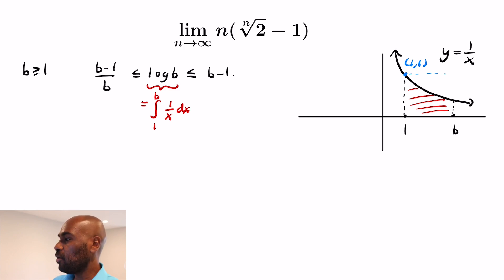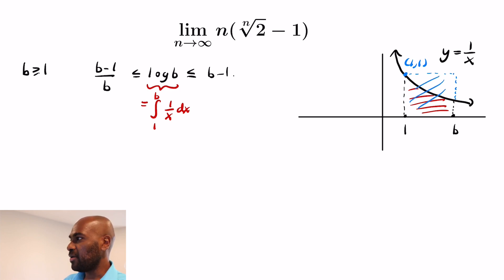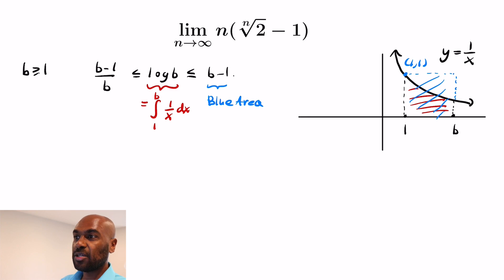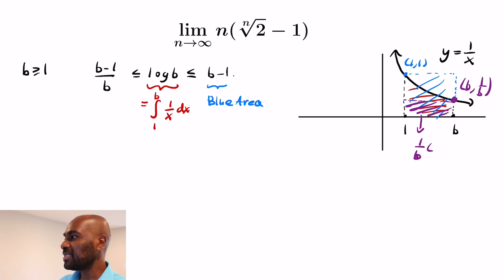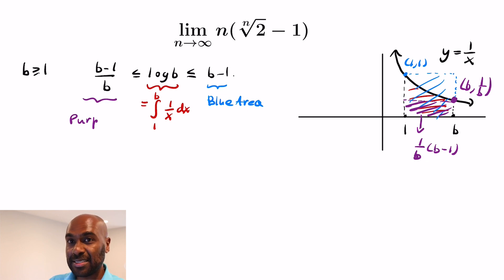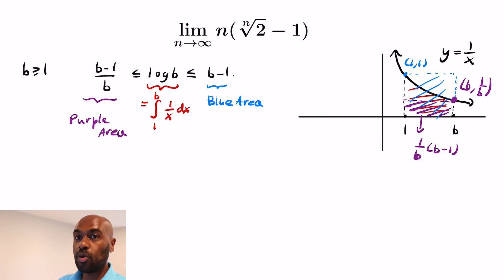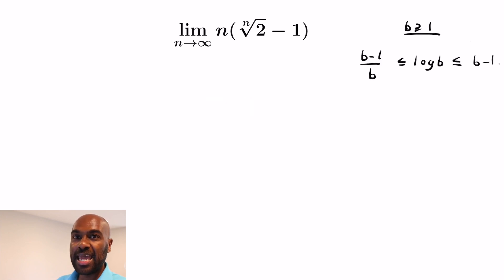If we look at the point at x=1, its y-coordinate is 1. So the blue area is a rectangle of height 1 and base length b-1, giving the right-hand side of the inequality, which bounds log b from above. Similarly, at the point x=b we get y = 1/b, and the purple rectangle has height 1/b and base b-1, which is less than or equal to the actual integral.